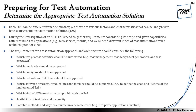To start, the first fundamental is that each system under test can be different from one another, yet there are various factors and characteristics that can be analyzed to have a successful test automation solution. During the investigation of an SUT, the test automation engineer needs to gather requirements considering its scope and capabilities. Different kinds of applications — web service, mobile, or web — need different kinds of test automation from a technical point of view.